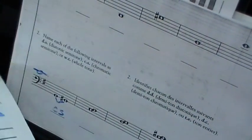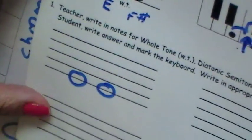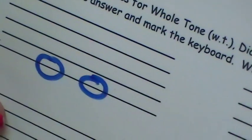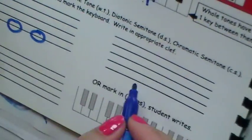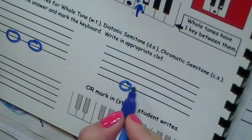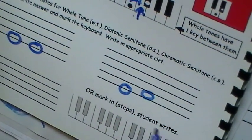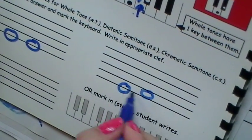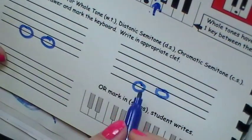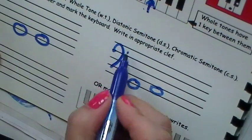So remember, if you get asked for chromatic, keep it on the same line or space. If you get asked diatonic, look at the question to see if it goes up or down. If it goes up, write it on - if this is a line note, write it on the space right above. And then check your answer on the keyboard to see.